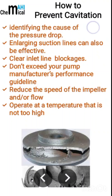Now, how to prevent cavitation in centrifugal pumps. To do that, you have to identify the exact cause of the pressure drop. Pressure drop basically happens due to unwanted bends in the line, due to different types of valves, and due to different line sizes — like sudden increases and decreases in line size.